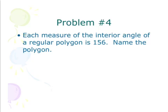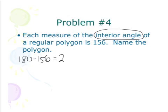Alright, for this one, the question is asking where it says, each measure of the interior angle of a regular polygon is 156. Name the polygon. Now, we have our interior angle. One thing I think I told you guys in class is it's a lot easier to deal with the exterior. Well, if the interior is 156, I can find out my exterior angle by just subtracting that from 180. And what I end up with here is going to be 24 degrees. So that's my exterior angle.